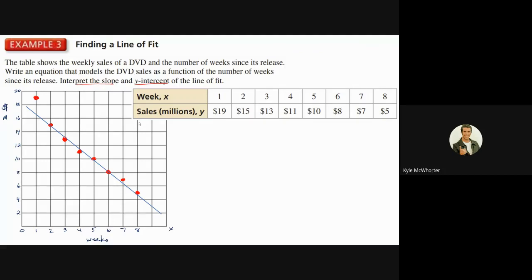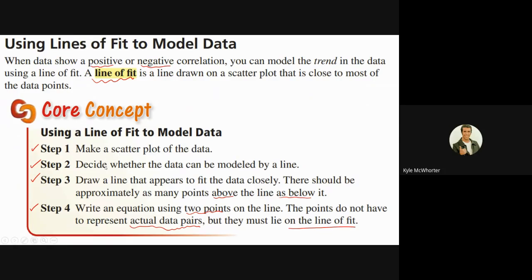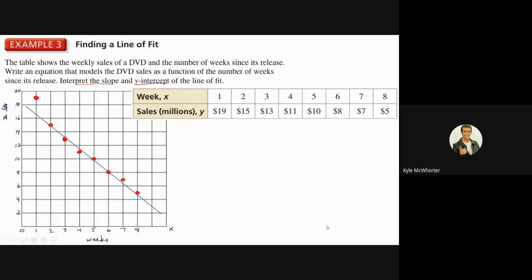Looking at the steps: we made the scatter plot, it was pretty clear it could be modeled by a line, then we drew the line trying to have as many points above as below. Now for the last part, we're going to write an equation using two points on that line. Those points don't have to be actual data pairs, but they have to be on the line of fit. You don't want to pick points that are really close to each other.